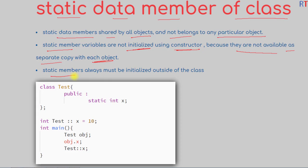Static members must always be initialized outside of the class. For example, we have a class called 'test' with a static data member 'x' inside it. We must initialize that static member outside of the class definition using the class name along with the scope resolution operator and then assign a value to it.